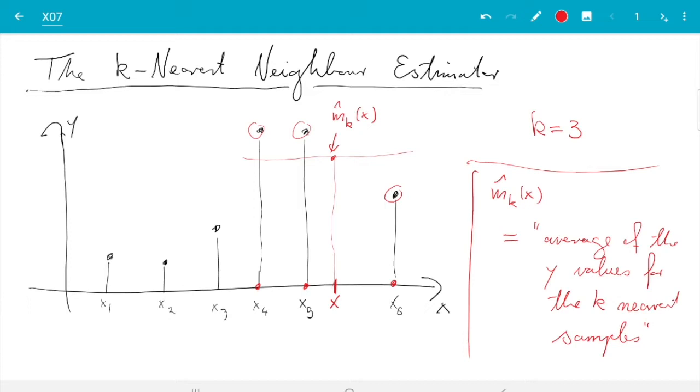So that is in words what the k-nearest neighbor estimator is. And in the notes I wrote that as a formula which makes it look more mathematical, but admittedly nothing much is gained by that way of writing it. So we can just as well use that one and I am not going to explain the formula here.